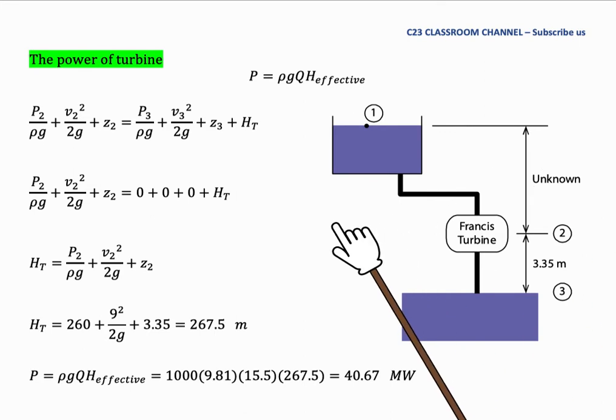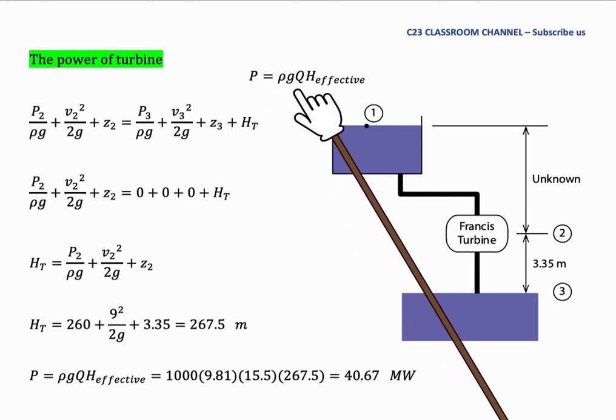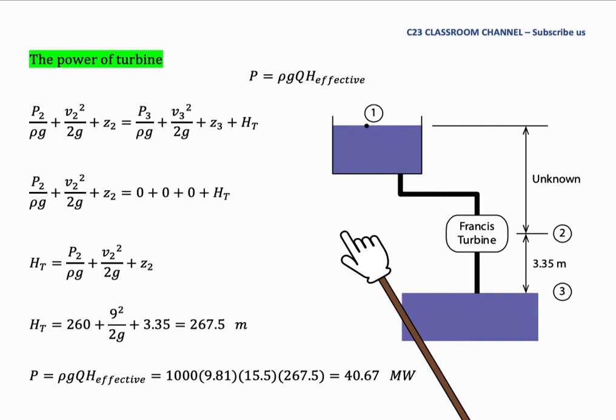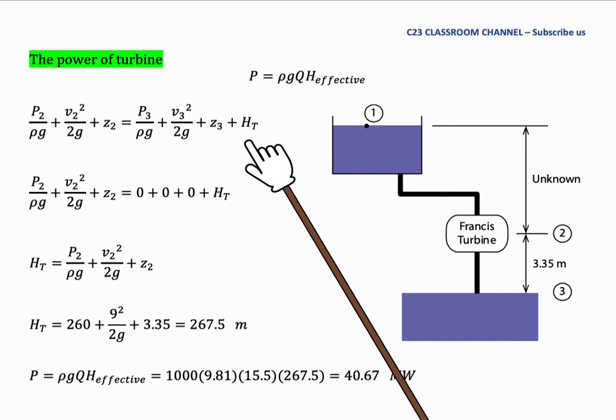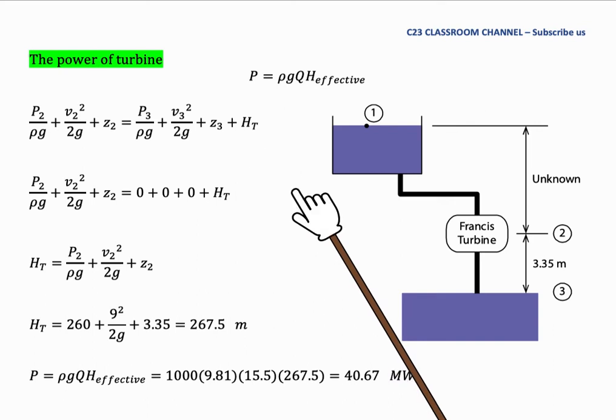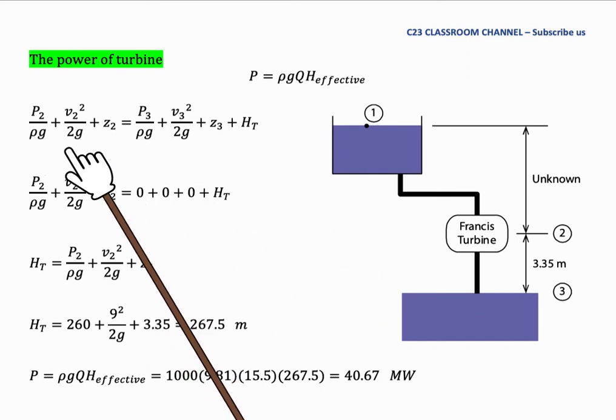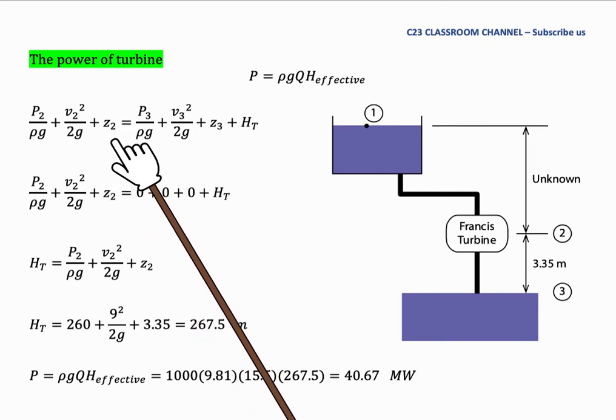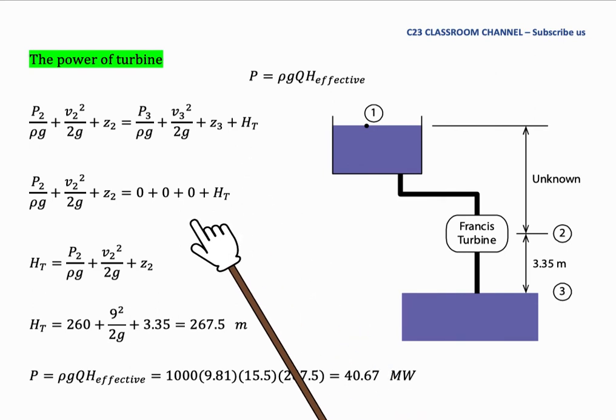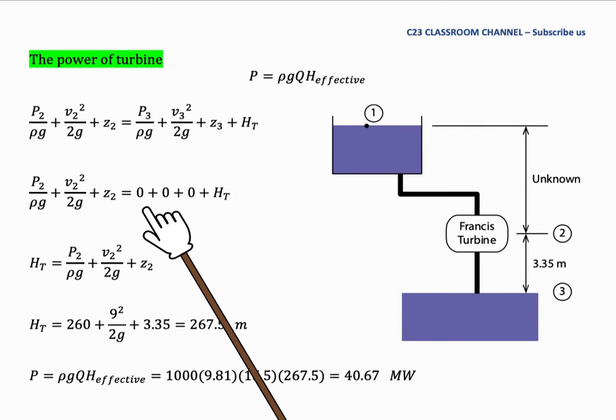To calculate the power of turbine, we will use this equation: P equals ρgQH effective. And then from this diagram, we could also write a Bernoulli equation. Because we know the distance from two to three, it is wise for us to write Bernoulli equation comparing energy at point number two and point number three. So we have Bernoulli equation: P over ρg plus v squared over 2g plus z. We substitute all the value here. We could say that pressure at point number three is equal to zero because it is atmospheric pressure.